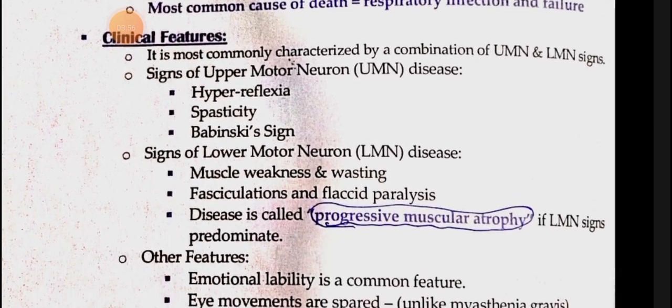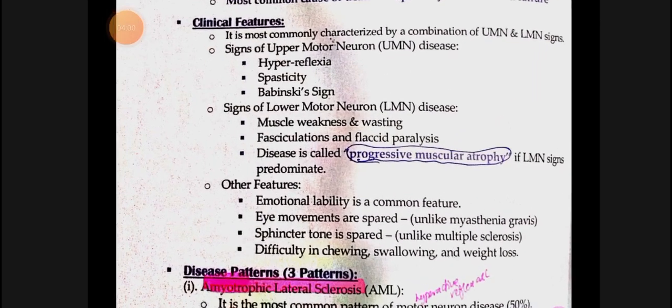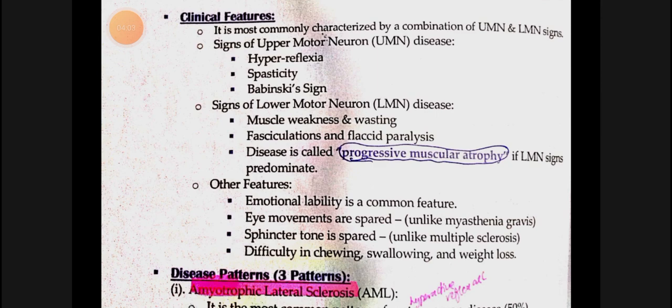The important clinical feature of motor neuron disease is that both upper and lower motor neuron signs appear together. UMN signs include increased reflexes, increased tone, spastic paralysis, positive Babinski's sign. LMN signs include muscle atrophy, muscle fasciculations, flaccid paralysis, and other reduced signs. If lower motor neuron signs predominate, it is called progressive muscular atrophy.